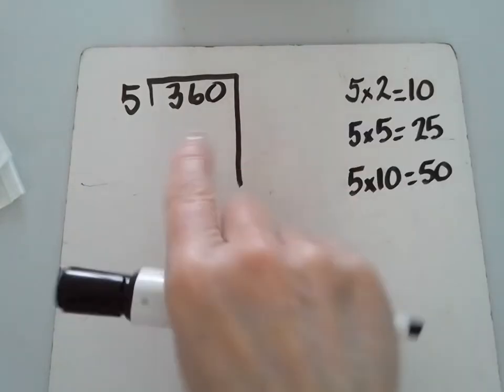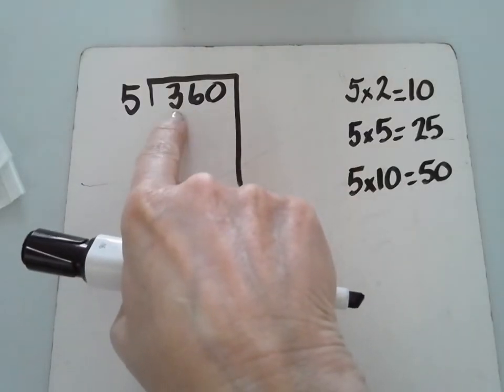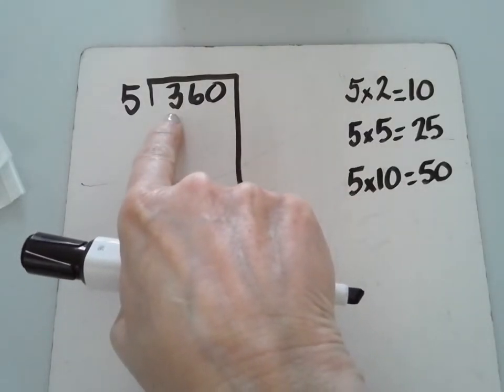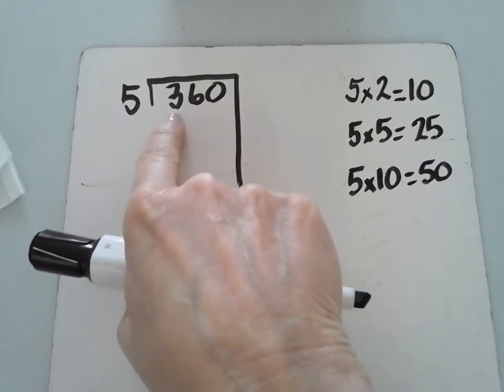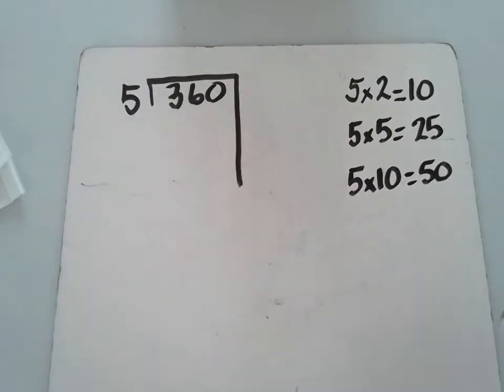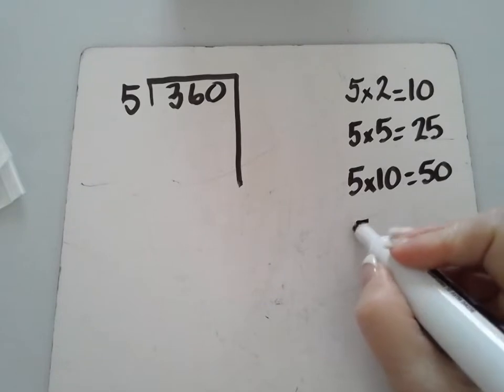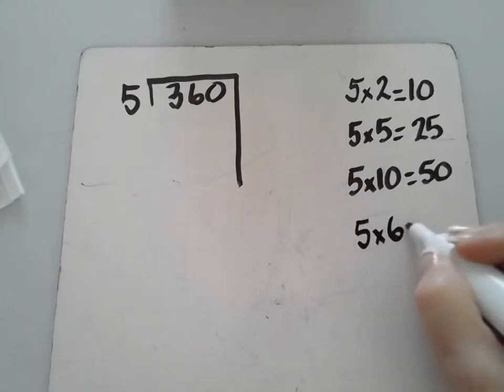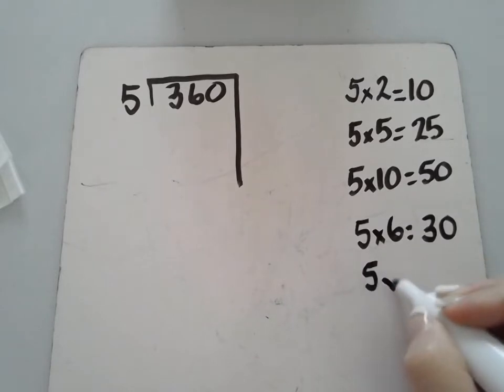So I want to take a look at these first two digits right here. I have a five and five times something I know gets me close to 36. Well, looking over here at my list, I see that 25 is close, but I think I could get even closer. Let's see. I know five times six is 30, and I know five times seven is 35.